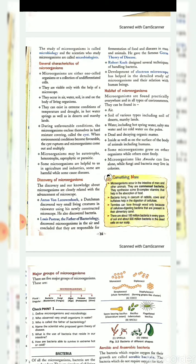Micro-organisms may be autotrophs, heterotrophs, saprophytic, or parasitic. Some micro-organisms are helpful to us in agriculture and industries. Some are harmful, while some cause diseases in humans.